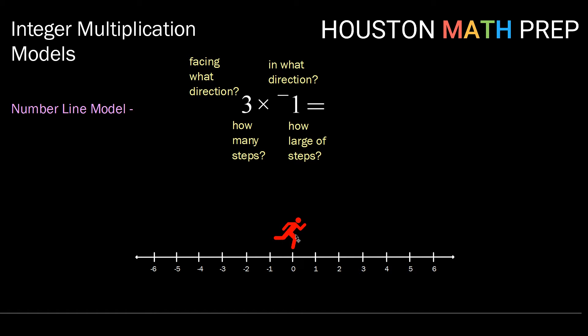We are starting facing the positive direction, or the right. We're going to take 3 backward steps, because negative means take backward steps on our number line model. How large are those steps? They're going to be one unit each. Let's go ahead and do that.